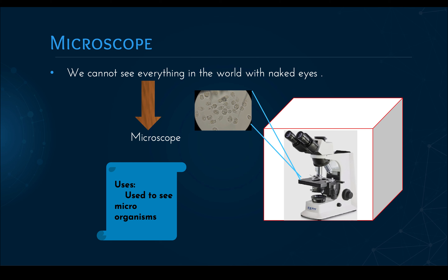In our present situation, that is the coronavirus — how do scientists say that there is a virus living in it? They will take the blood and with the help of a microscope only, they are able to understand that some living creature is inside it. With the help of a microscope, they have proved that a virus is living and it is causing the disease.